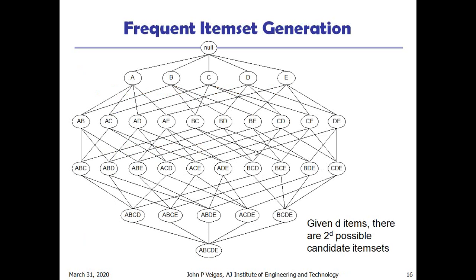Now we are going to see about frequent item set generation for five elements or five items: A, B, C, D, E.